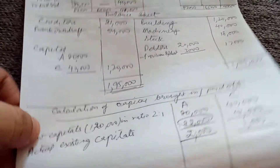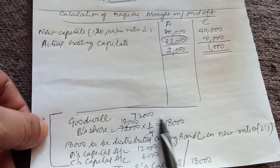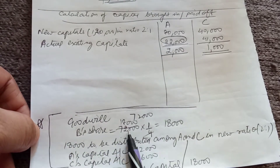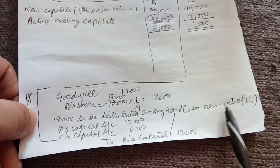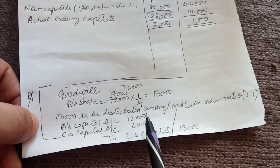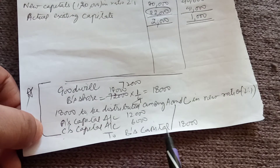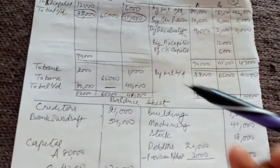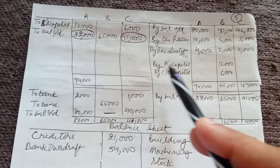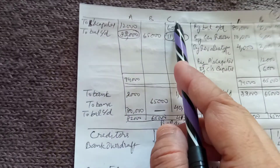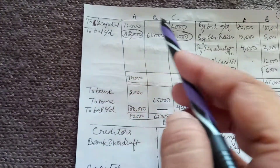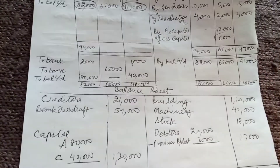Goodwill calculation: Total goodwill = ₹72,000; B's share = 72,000 × 1/4 = ₹18,000. This ₹18,000 is distributed among A and C in their new ratio 2:1 — A's capital debited ₹12,000 and C's capital debited ₹6,000; B's capital credited ₹18,000. In the capital accounts: B's capital account shows credit from A's capital ₹12,000 and C's capital ₹6,000; A's and C's capital accounts show debit to B's capital ₹12,000 and ₹6,000 respectively.